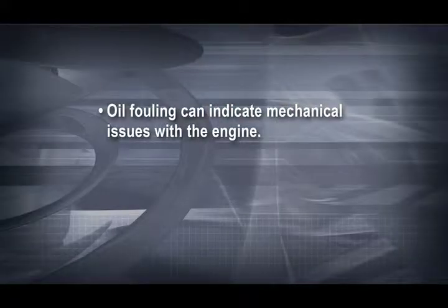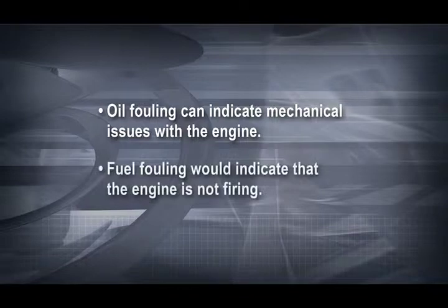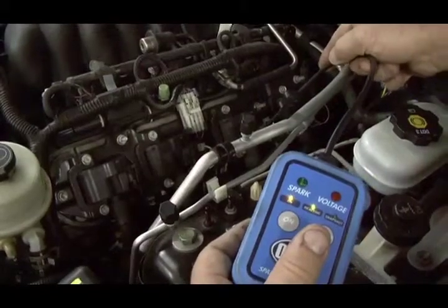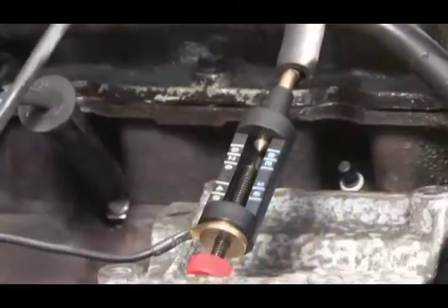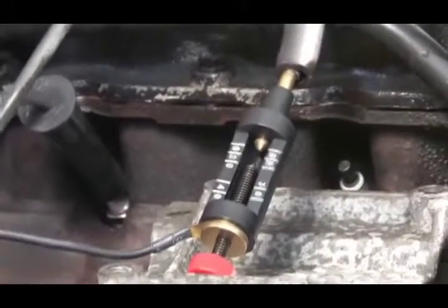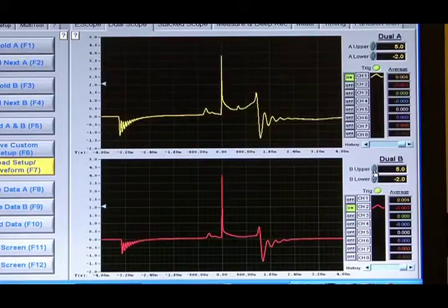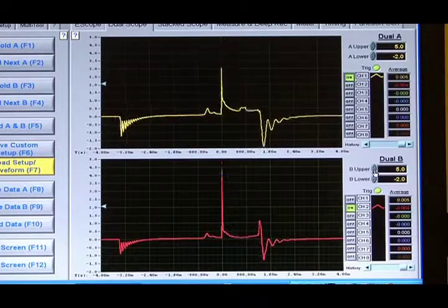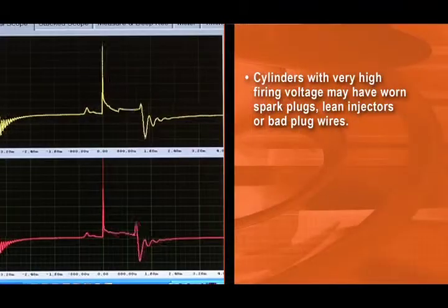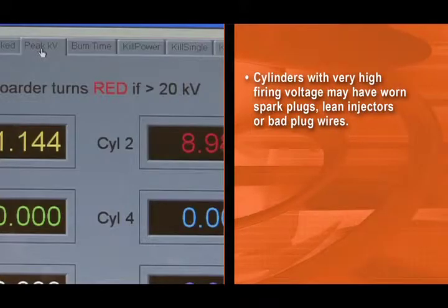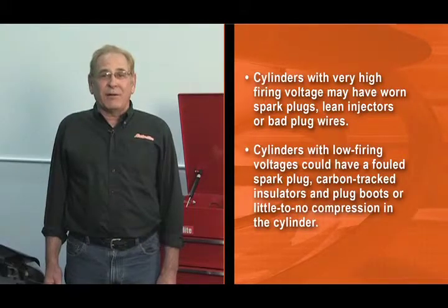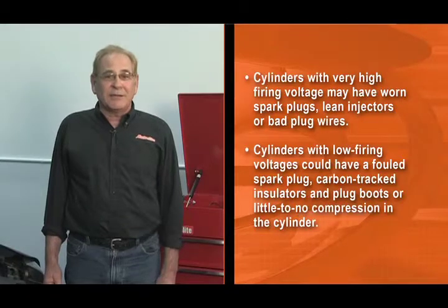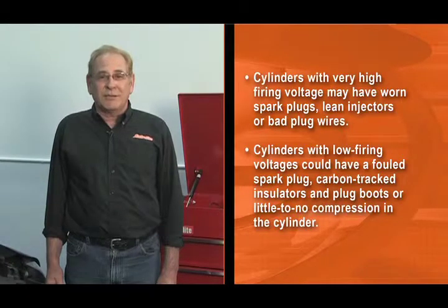Oil fouling can indicate mechanical issues with the engine. Fuel fouling would indicate that the engine is not firing. Test for spark at the plug first with a spark tester, then test output from the coil. A simple spark tester will show if the coil is producing enough voltage to fire a plug in a cylinder. If you have an oscilloscope, hook it up and take a look at the ignition waveforms. Cylinders with very high firing voltage may have worn spark plugs, lean injectors, or bad plug wires. Cylinders with low firing voltages could have a fouled spark plug, carbon tracked insulators and plug boots, or little to no compression in the cylinder.